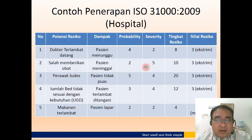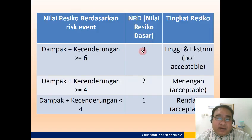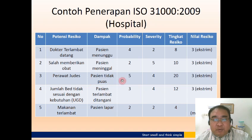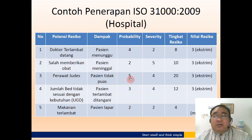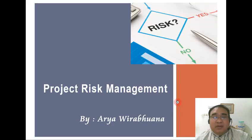Berikutnya, salah memberikan obat. Probability-nya jarang terjadi, tapi pasien bisa meninggal. Severity-nya parah, level 5. Tingkat resikonya 2 kali 5 hasilnya 10, masuk di 3 karena lebih dari 6 — ekstrim. Kemudian perawat judes, pasien tidak puas. Probability-nya kadang-kadang ada, dampaknya tidak setinggi kematian. Ini adalah gambaran tingkat resikonya dalam matriks.